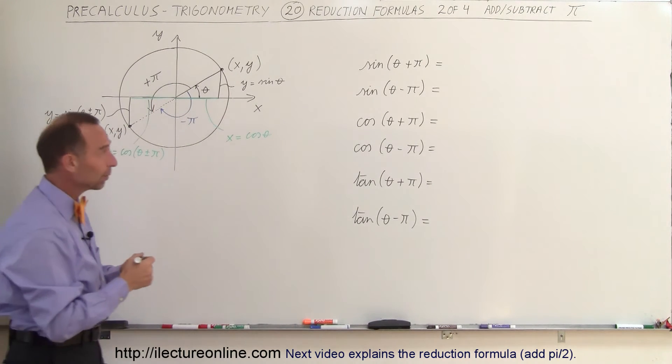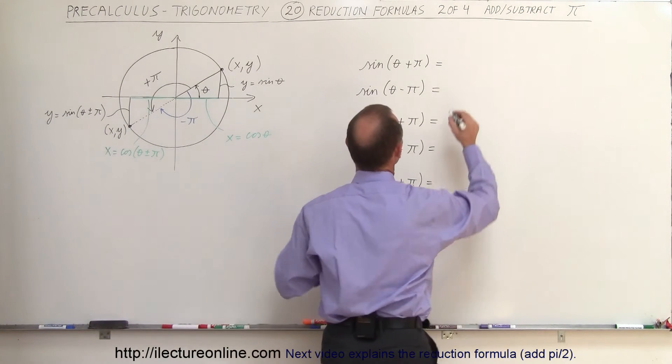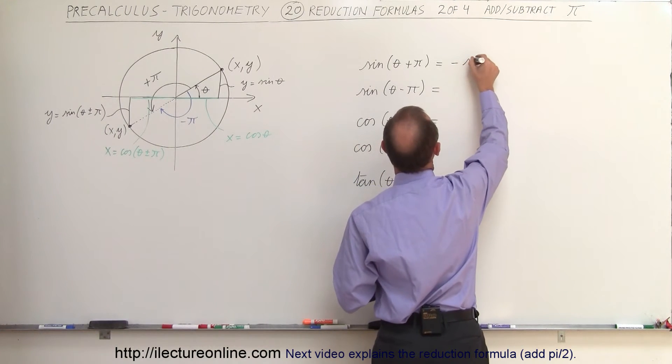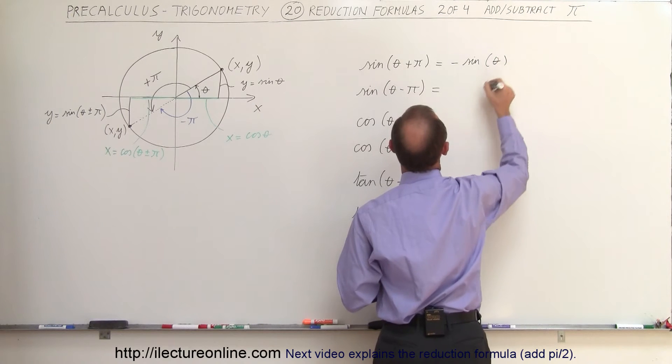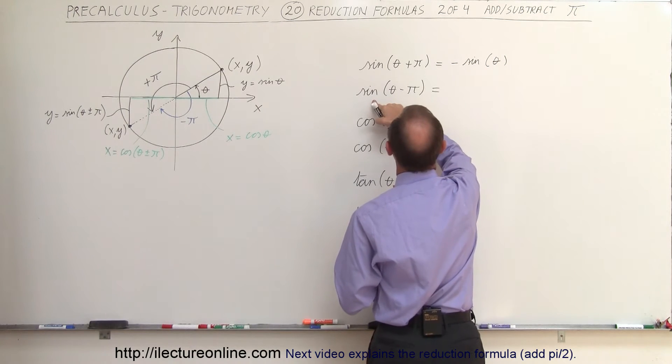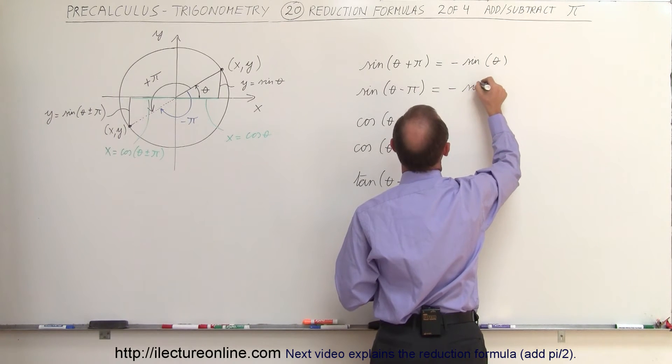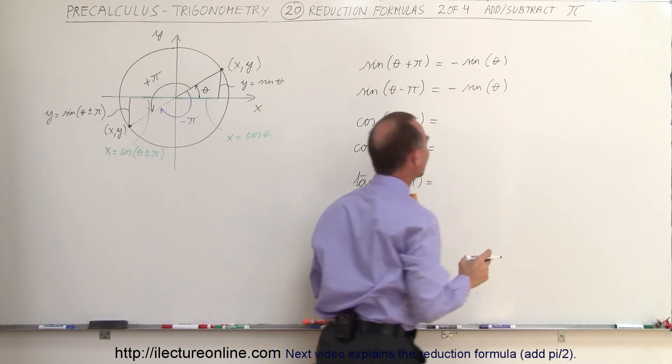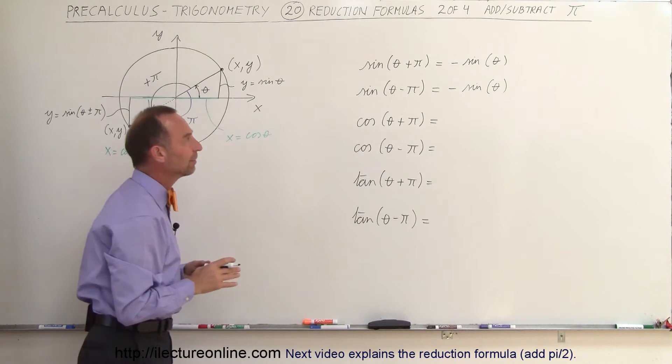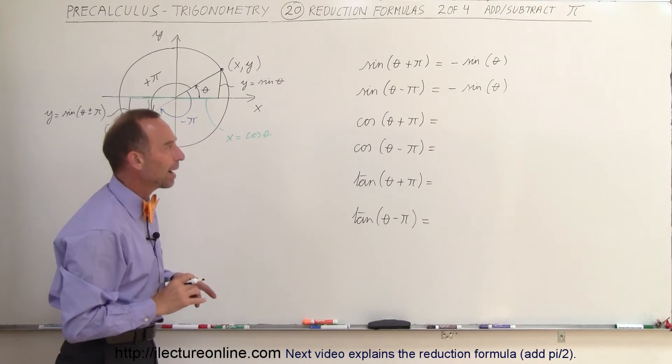We end up at the same place which means that when we add pi to an angle the sine then becomes the negative sine of theta, and here the sine of theta minus pi that is equal to minus the sine of theta as well. So we just simply get the negative value of that angle if we add or subtract the pi from that.